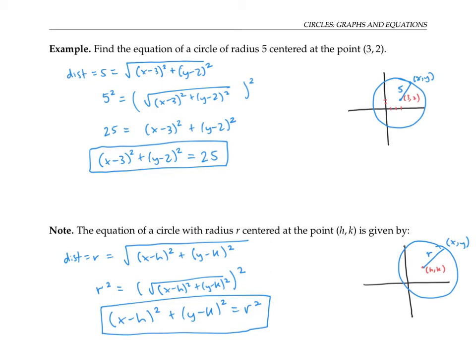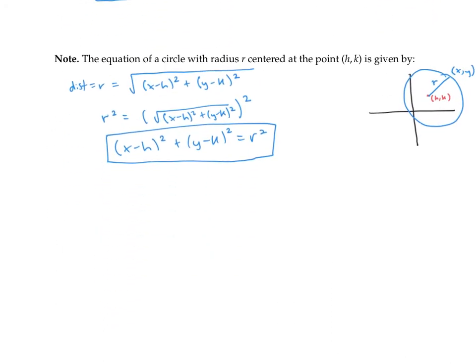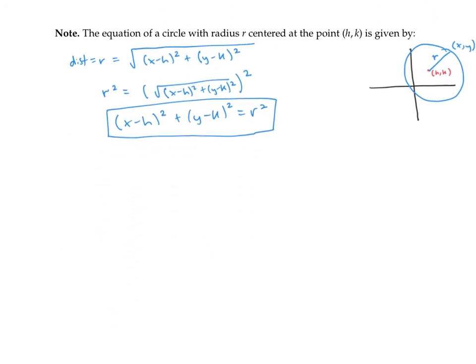Notice that the coordinates of the center point h and k are subtracted, but these two squared terms are added because they're added in the distance formula. And notice that the radius is squared on the other side. If you remember this general formula for a circle, that makes it easy to write down the equation of a circle.